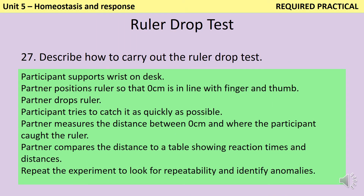To carry out the ruler drop test you need two people: one to take the test and one to administer it. The participant rests their arm on the desk to stop their hand from moving. The partner positions a metre ruler so that the zero centimetre mark is in line with the participant's finger and thumb. Without any warning, the partner drops the ruler and the participant tries to catch it as quickly as possible. The partner measures the distance from zero centimetres to where the participant caught the ruler, then uses a table comparing distances and reaction times to calculate reaction time. This experiment should be repeated more than once to look for repeatability and identify any anomalous results.